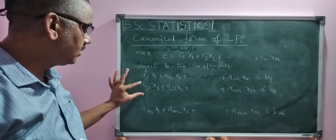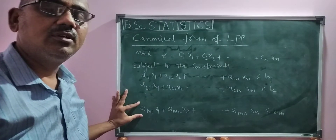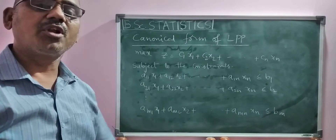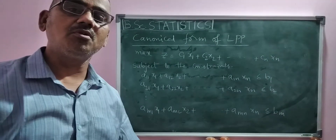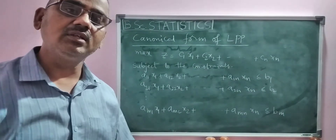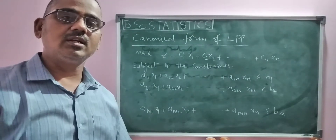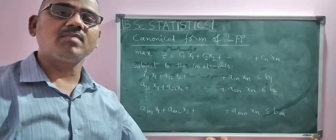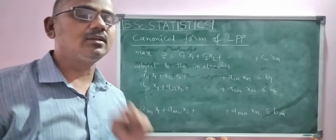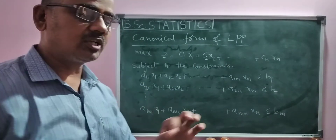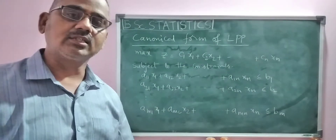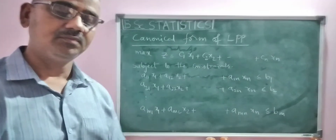First constraint, second constraint, and so on through the m-th constraint — these m constraints must all be less than or equal to. In a general linear programming problem, we may have less than or equal to, greater than or equal to, or equal to. But in the canonical form, constraints must be less than or equal to. If a particular constraint is given as greater than or equal to, you must multiply by minus 1 to convert it into less than or equal to type.